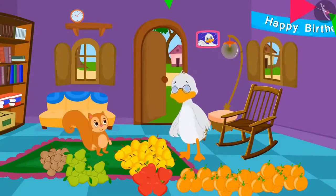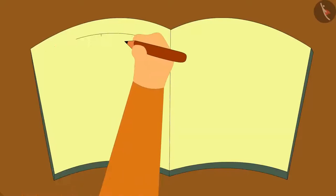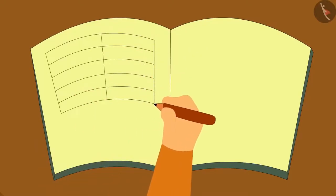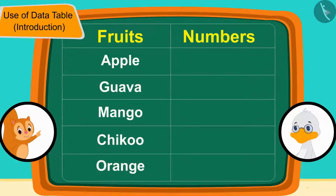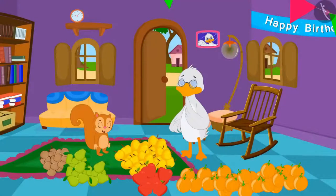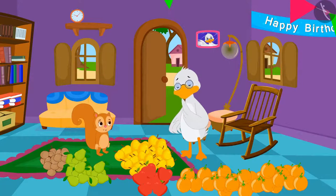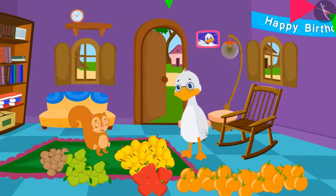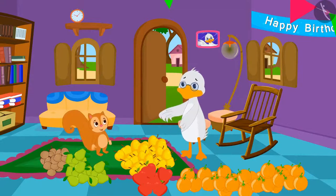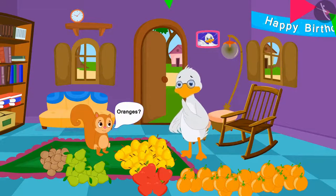Chanda told Uncle not to be sad — she had another solution. She quickly made a table on paper and said they could use it to write down the number of fruits so they don't forget. She wrote the names of all the fruits, and as they finished counting each one, they would write the total number in front of its name. Uncle, do you remember the number of oranges?